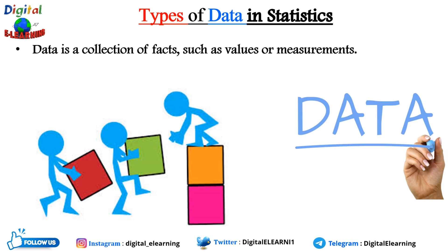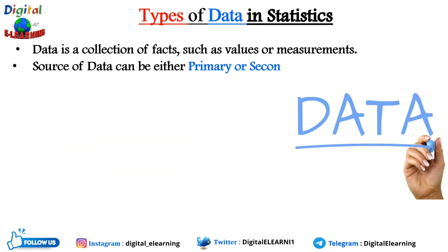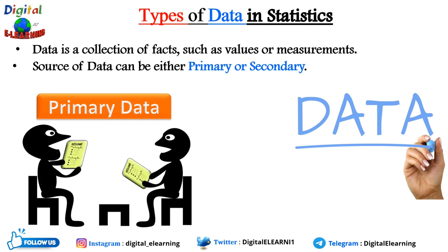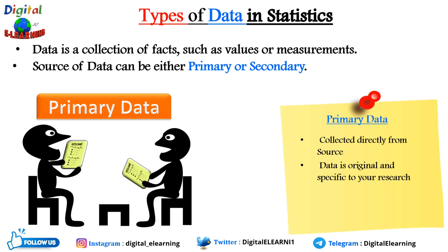The sources of data can either be primary or secondary. Primary data is information collected first-hand directly from the source — for example, conducting a survey or asking people about their favorite ice cream flavor. The responses you get are primary data. This data is original and specific to your research, making it super valuable for drawing conclusions and making decisions.